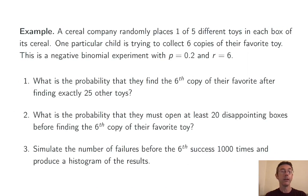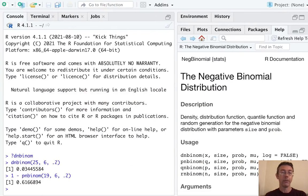Finally, simulate the number of failures before the sixth success 1000 times, and then produce a hopefully attractive histogram of the results. Okay, so in this case, since we're doing simulations, it's an rnbinom command.